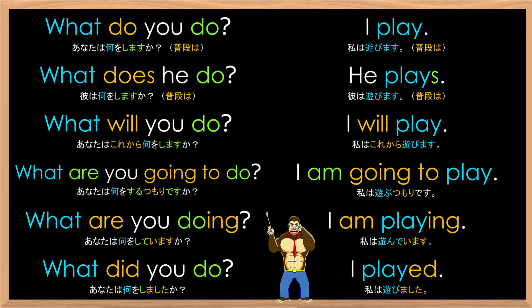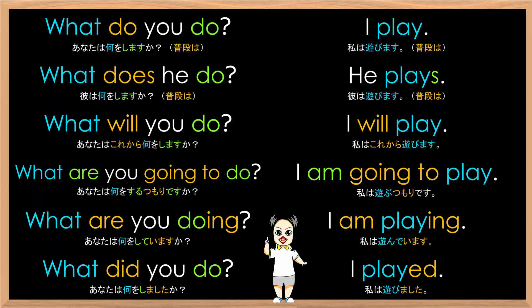Okay, you read the sentences next. 'What do you do?' — 'I play.' 'What does he do?' — 'He plays.' 'What will you do?' — 'I will play.' 'What are you going to do?' — 'I am going to play.' 'What are you doing?' — 'I am playing.' 'What did you do?' — 'I played.'